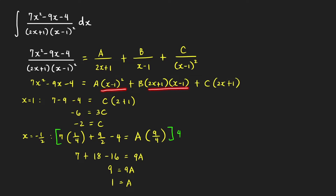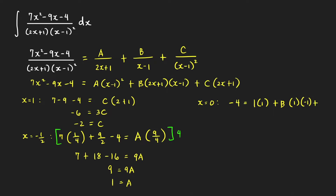Now that we've used the strategic x values, we can plug in any other value of x to find b. The best choice is x equals 0. Substituting, we get negative 4 equal to 1 times (0 minus 1)² plus b times (2 times 0 plus 1) times (0 minus 1) plus negative 2 times (2 times 0 plus 1). This gives negative 4 equal to 1 minus b minus 2, so b equals negative 1 plus 4, which is 3.